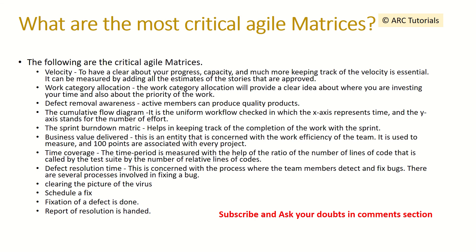What are the most critical agile metrics you follow? Key metrics include: velocity — how well the team is progressing on user stories and whether there are any impediments or rollovers — defect removal awareness, and the cumulative flow diagram. These metrics provide detailed analytics of the sprint team and the work being done, allowing us to track defect resolution and report resolutions, giving a clear picture of how the sprint is progressing.